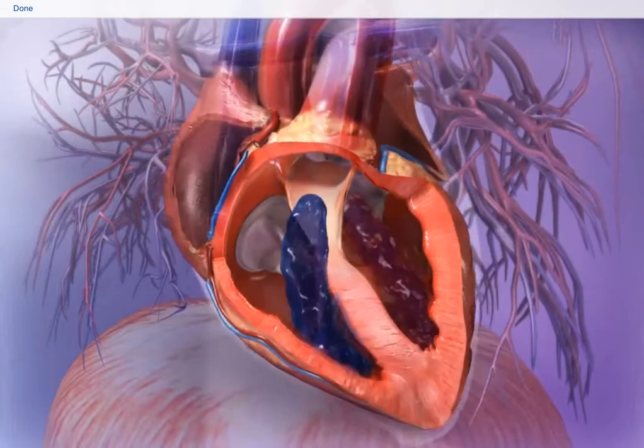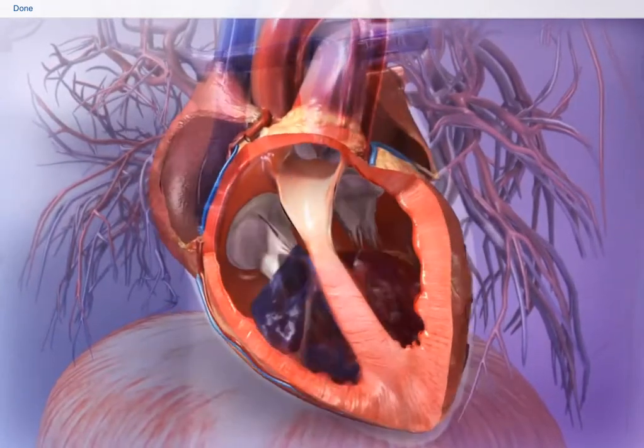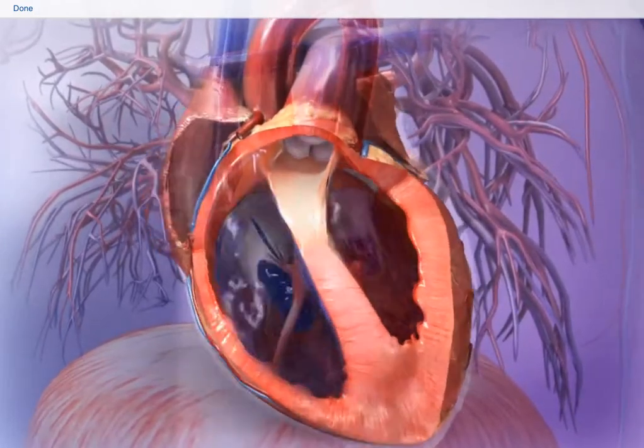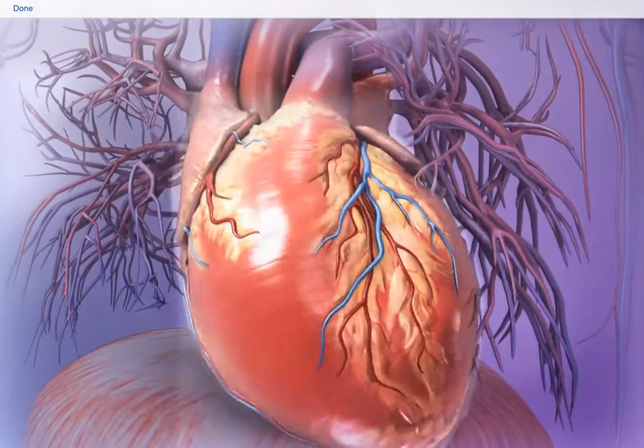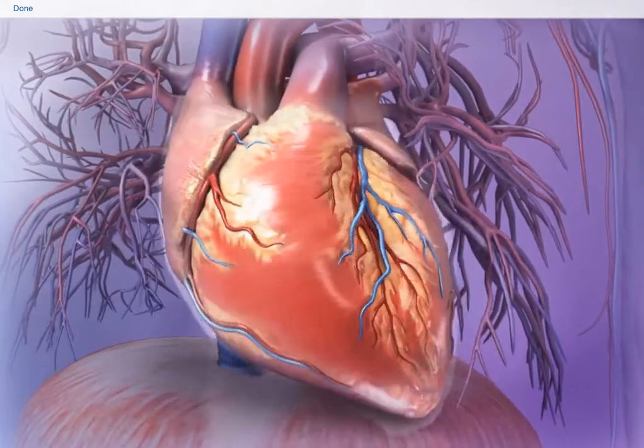The right and left sides of the heart work in coordination to pump oxygenated blood throughout the body and deoxygenated blood to the lungs. The heart of a healthy adult beats about 60 to 70 times a minute to keep blood constantly moving.